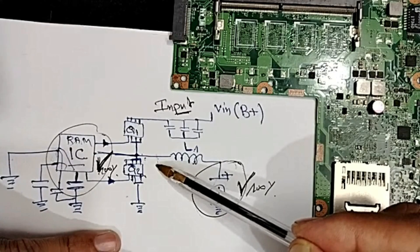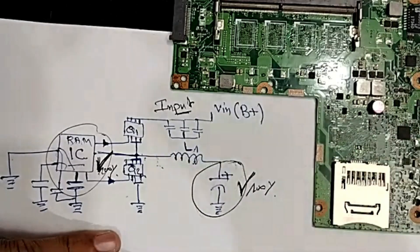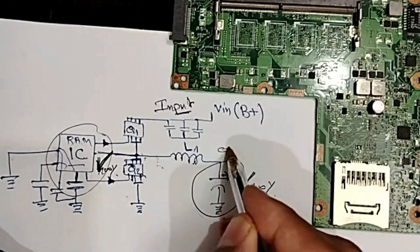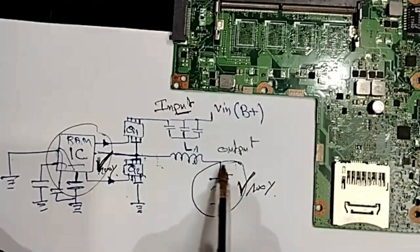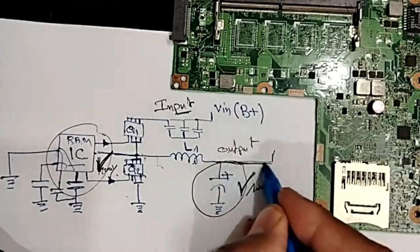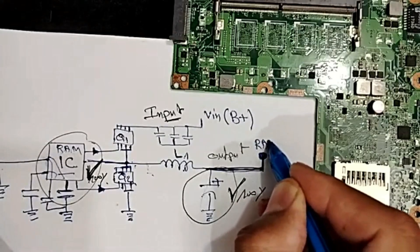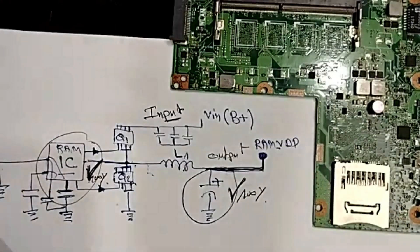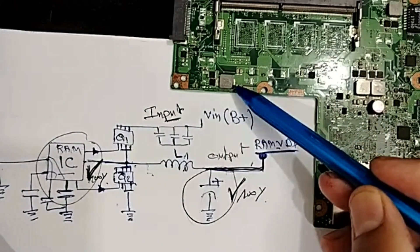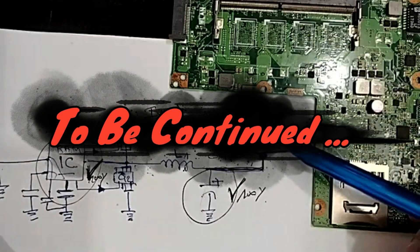In every motherboard, regardless of whether the short is partial, a deep short, or any kind of short. Here we have the input, here we have the output — the output inductor. We have the electrolytic capacitor, which is not installed. Here we have the RAM VDD voltage output. The voltage for the RAM will be generated — but unfortunately, for this motherboard, the voltage cannot be generated because we have a short. We have zero here. The RAM VDD will not be generated.